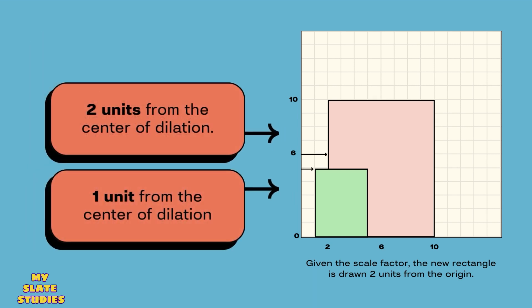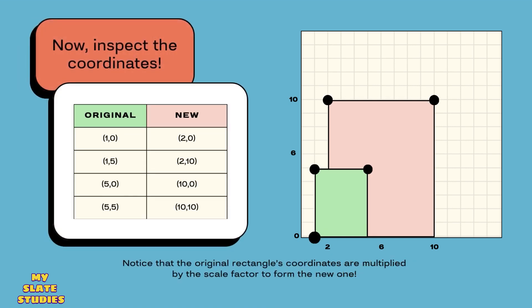Dilation can either result in an enlargement (scale factor greater than 1) or a reduction (scale factor between 0 and 1).